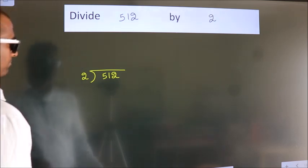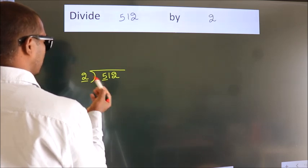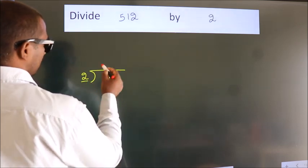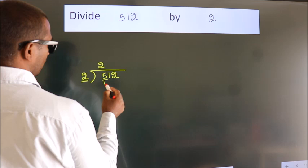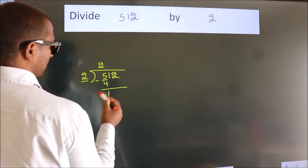Next, here we have 5, here 2. A number close to 5 in 2 table is 2 2s, 4. Now we should subtract. We get 1.